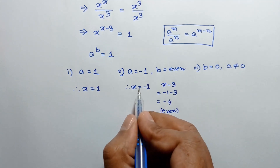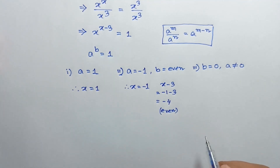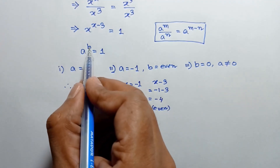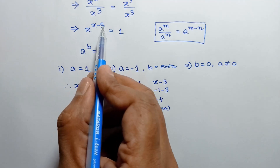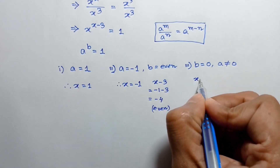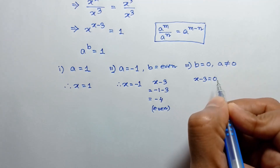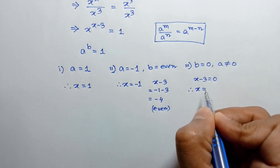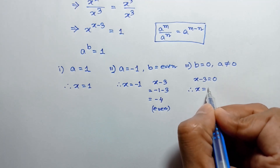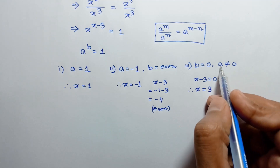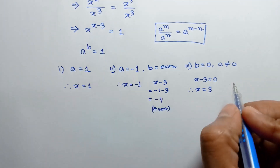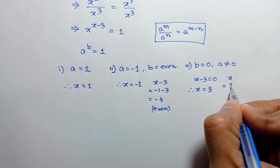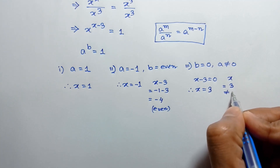For case three, b is equal to zero, so the power b means x minus three will be zero. So x minus three is equal to zero, which gives x equal to three. And a means this x, so the value of x is three, which is not equal to zero.